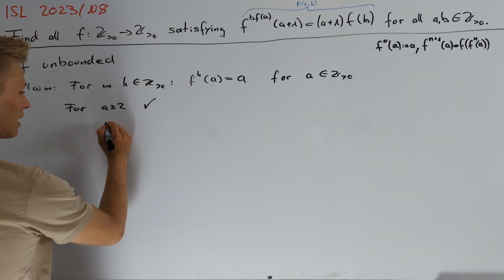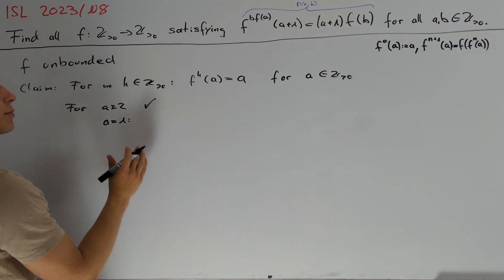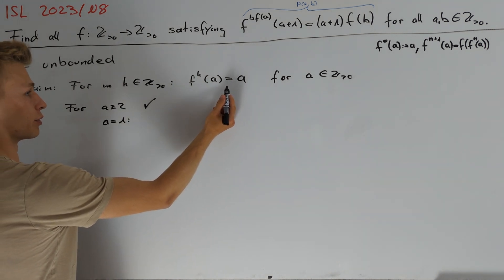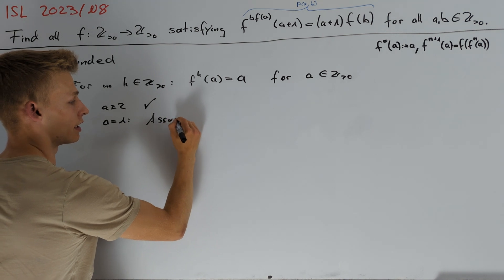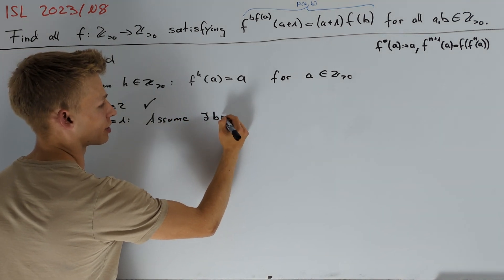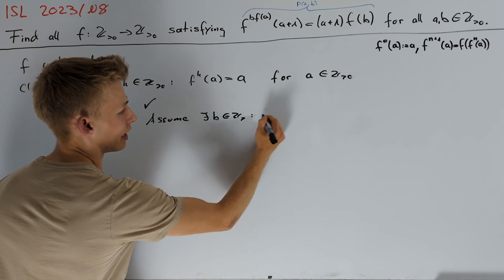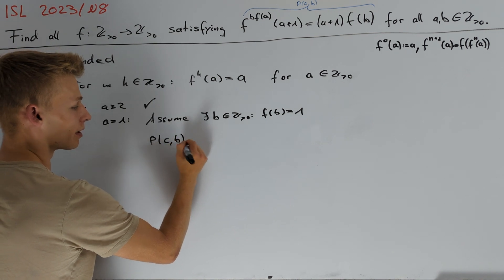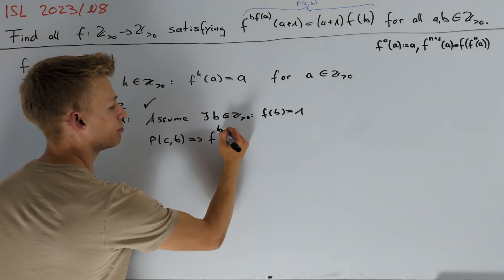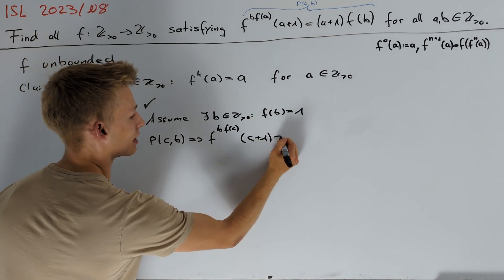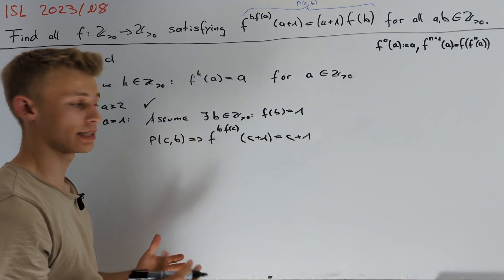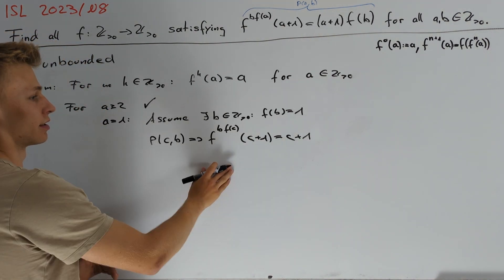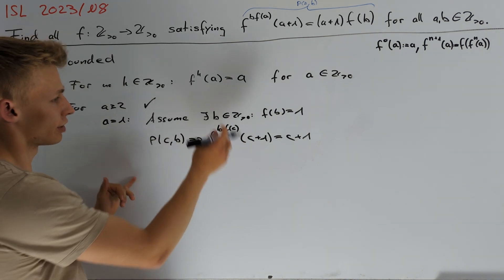So it's left to consider the case that a is equal to 1. Here we want to make a proof by contradiction. So we want to assume that we find a case such that f^k(1) = 1. And it is indeed enough to assume that we can find a positive integer b satisfying f(b) = 1. By taking a look at P(c,b), we get that f^(bf(c))(c+1) = c+1. By taking for example c = 1, we are again in the first case for which we already have proven that this is impossible. This gives us also a contradiction in our second case and therefore the claim is proven.